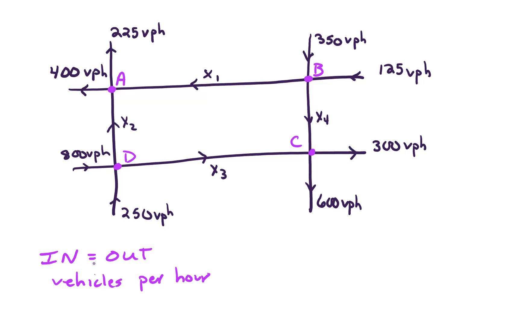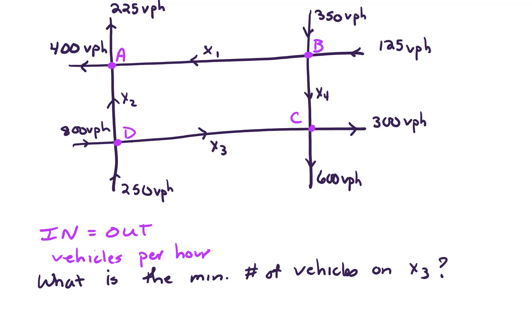And if we don't have in equals out, the problem is we're going to have a backlog of cars and get a traffic jam. We don't want that to happen. So this is a particular setup for pretend city, and this example is actually from a Gareth Williams textbook. What we want to answer is what is the minimum number of vehicles on X3 that we need in order to keep traffic flowing. So we have four intersections. Let's set up four equations.